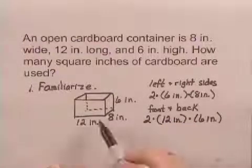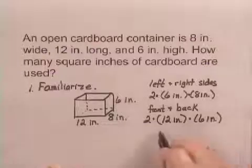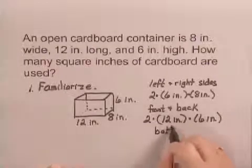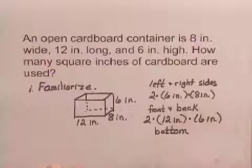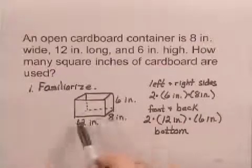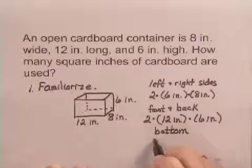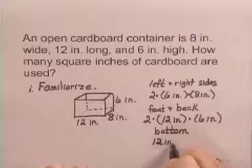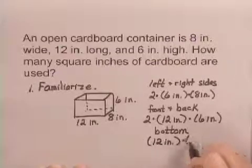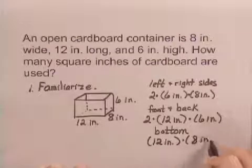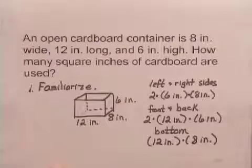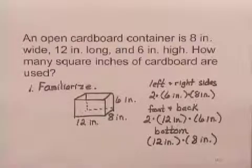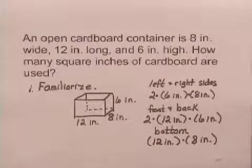We also have the area of the bottom of the box, but no top. So we just have the bottom of the box, and that is 8 inches by 12 inches. So the area of this would be 12 inches times 8 inches. That can all be done in the familiarize step, and I think we are familiar enough with the problem to be able to translate to an equation.